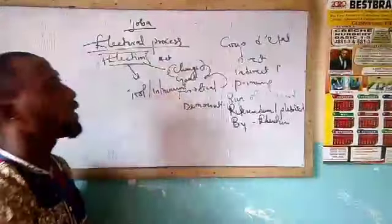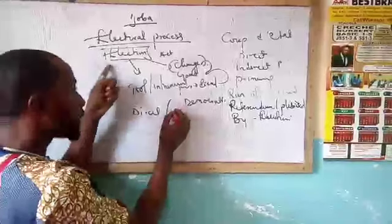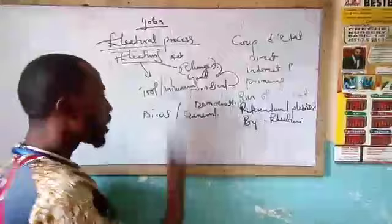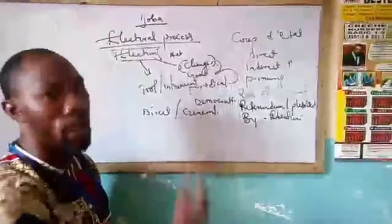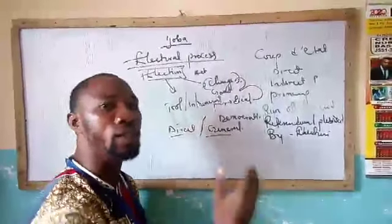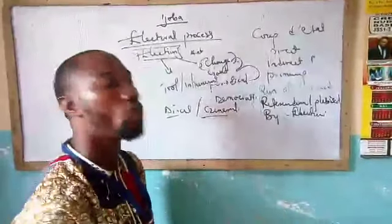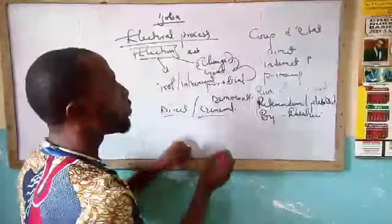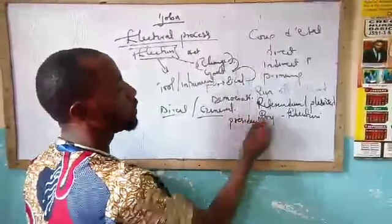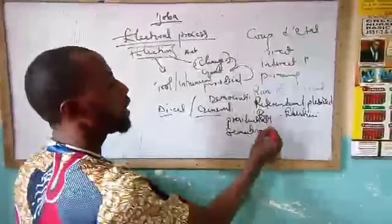Starting with direct election — anything that is direct is general in nature. So we can tell ourselves that general election is also referred to as direct election. This type of election is meant for everybody in the country. Examples of this type of election include presidential election, senatorial election, and gubernatorial election.